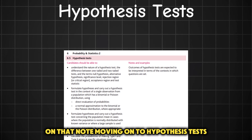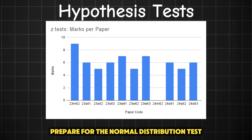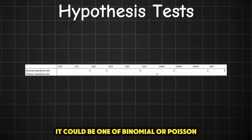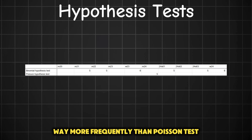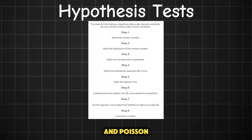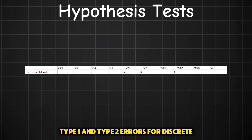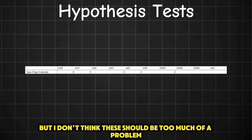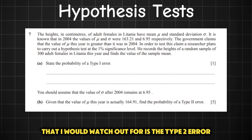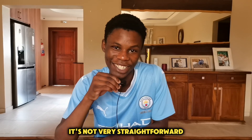Moving on to hypothesis tests — the norm is one normal distribution test and one discrete distribution test. The normal distribution test is definitely coming. For the discrete test it could be binomial or Poisson; binomial appears more frequently but the steps for both are essentially the same, the only difference being in evaluating the probability for the test statistic. For errors, there may be a few type 1 and type 2 errors for discrete, but the one to watch out for is the type 2 error for a normal test, which carries 5 marks and is not very straightforward.